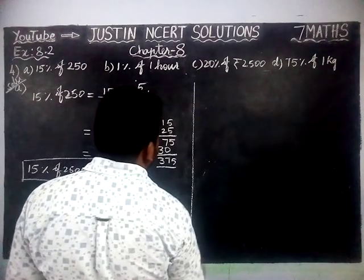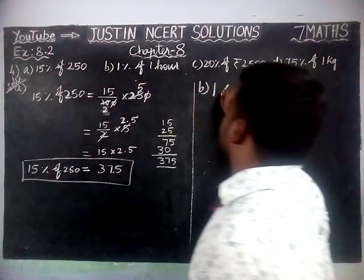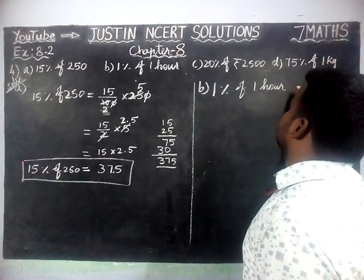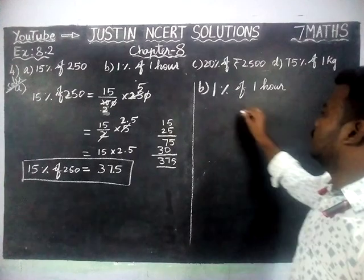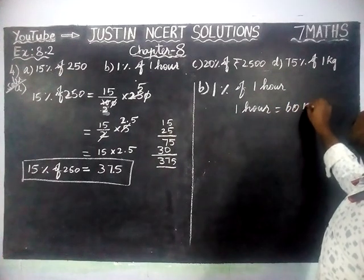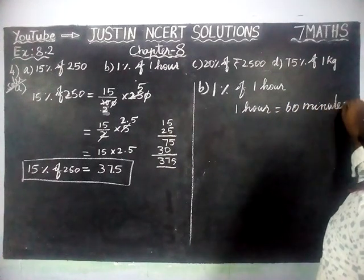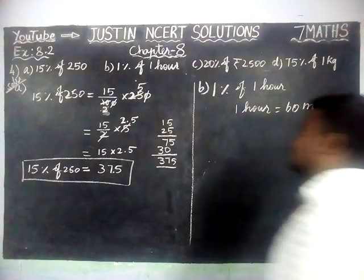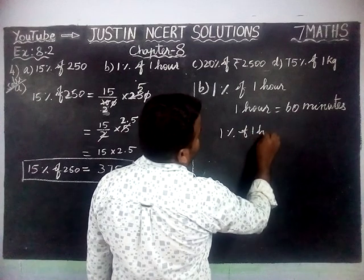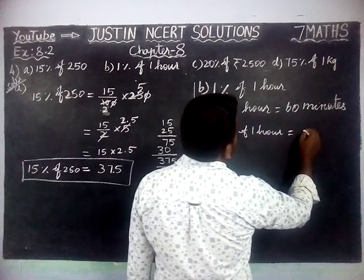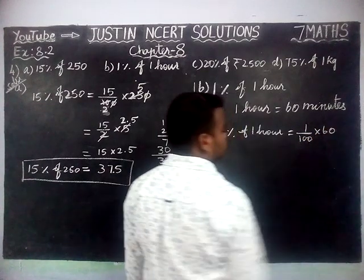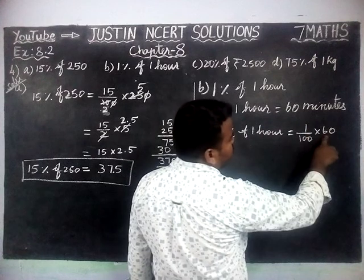Part B: 1% of 1 hour. We know that 1 hour equals 60 minutes. So 1% of 1 hour equals 1 divided by 100 into 60, because 1 hour equals 60 minutes, so we have converted.